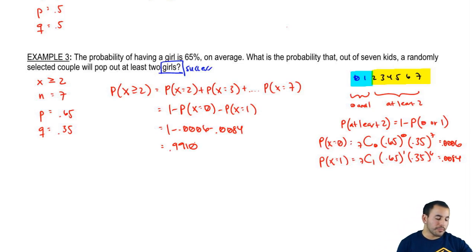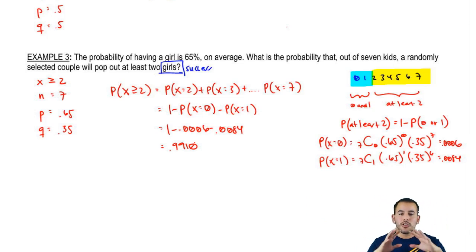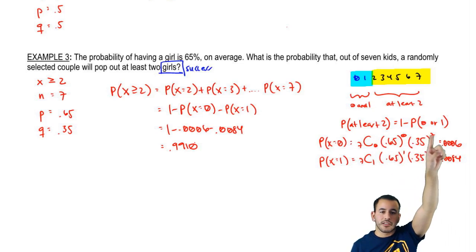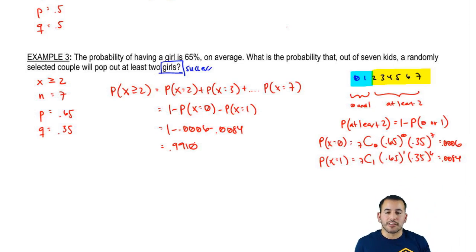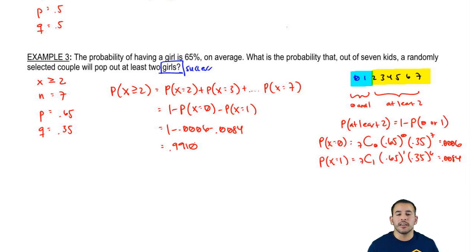Given that the probability of having a girl is 65%, the probability of having at least 2 girls out of 7 kids ends up being 99%. That makes sense because the chance of having a girl is higher than having a boy. That's about it for the binomial formula — let's do some practice problems, and then we'll talk about the binomial table, which will be a nice shortcut.